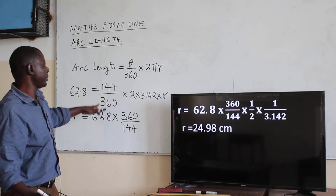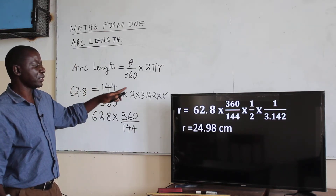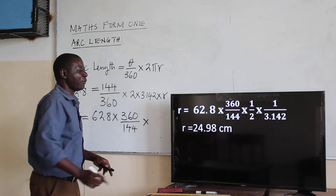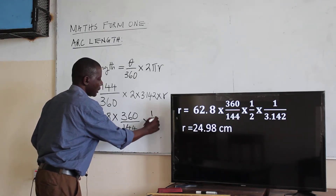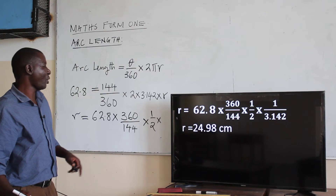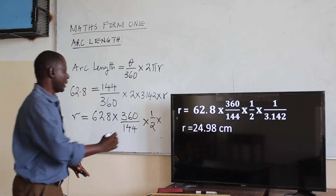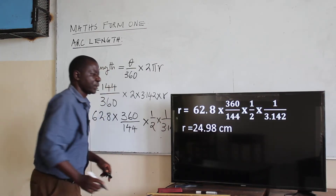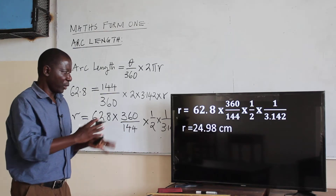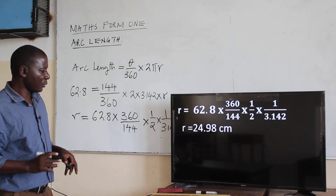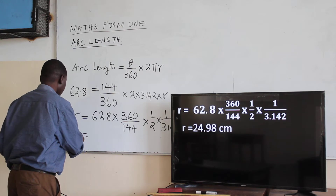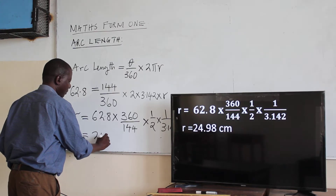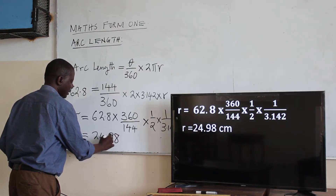We are going to get the reciprocal of the fraction of the circle. Then we multiply by the reciprocal of 2, which is 1 over 2. Then we multiply by the reciprocal of pi, which is 1 over 3.142. Calculating from there and punching into our calculator, we get the radius to be 24.98 centimeters.